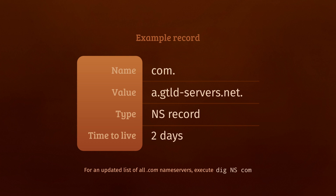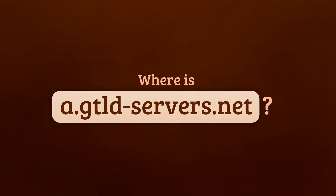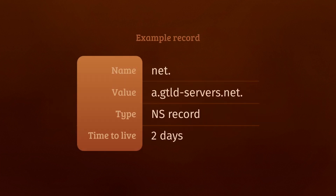We could do a DNS lookup for a.gtldservers.net, but if we ask the root name servers, they will point us towards the .net name servers, which unhelpfully are also located within gtldservers.net. We have a chicken and egg problem on our hands here, and glue records can get us out of this stalemate.